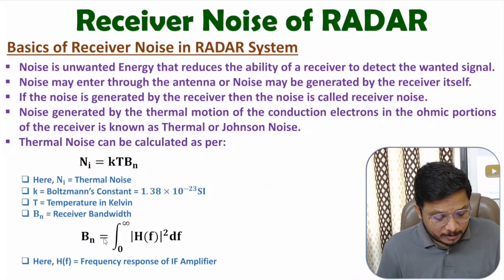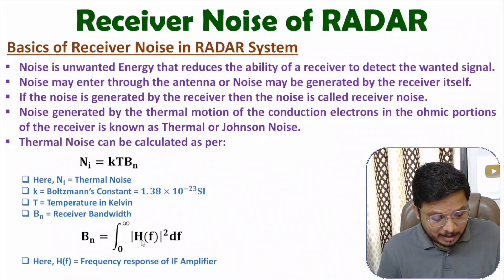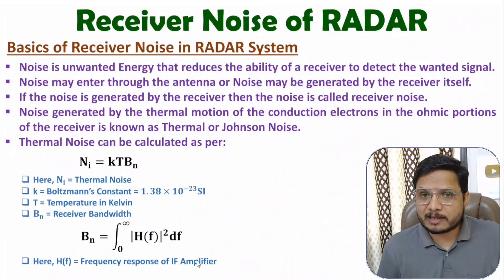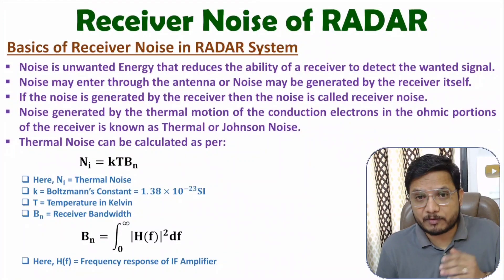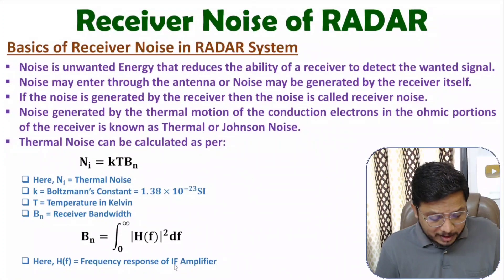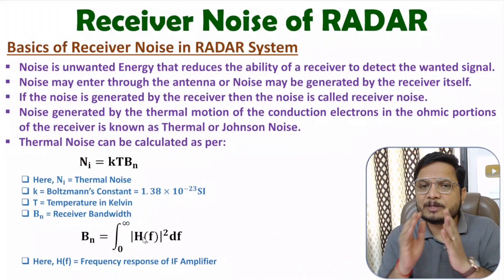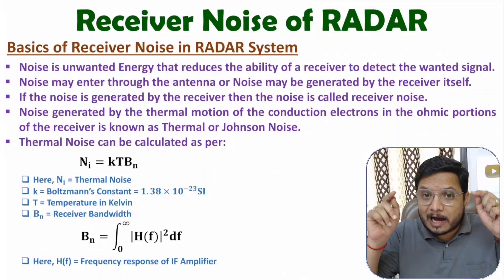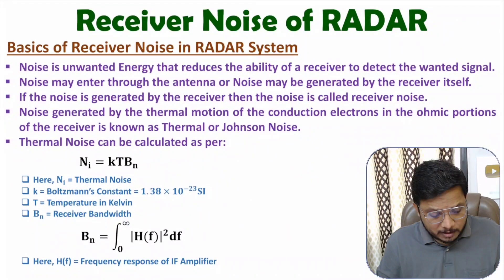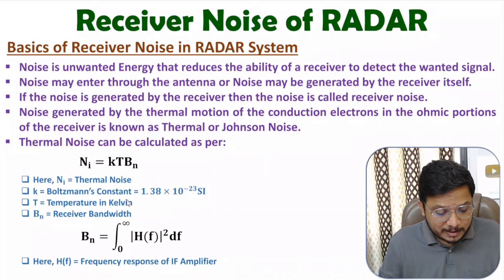The receiver bandwidth BN can be calculated by integration from 0 to infinity of |H(f)|² df, where H(f) is the frequency response of the IF amplifier. With that frequency response, we calculate bandwidth as the half-power bandwidth. Practically, when you observe the response of the IF amplifier, we calculate the half-power bandwidth — that is the bandwidth BN that we consider for thermal noise.